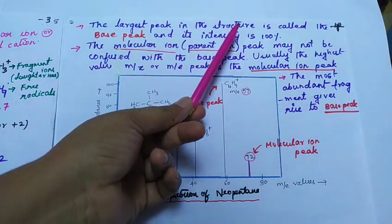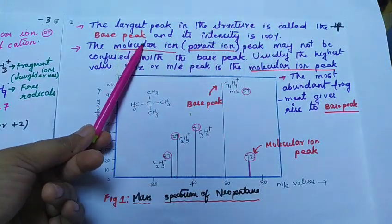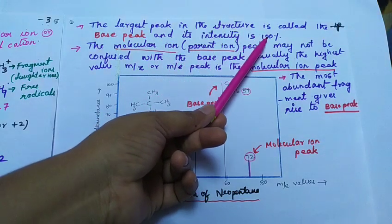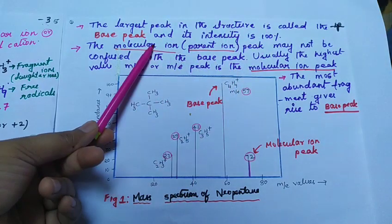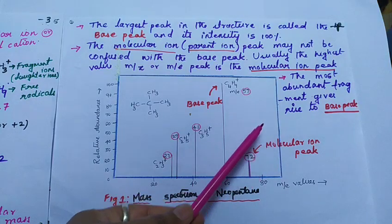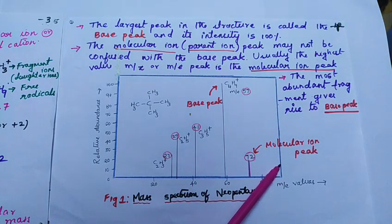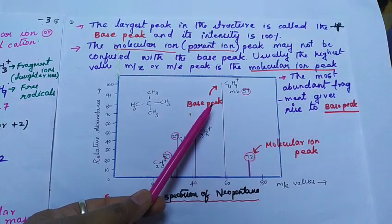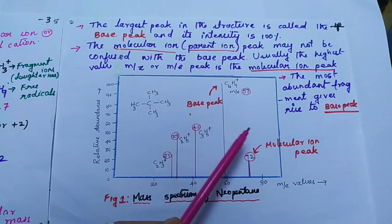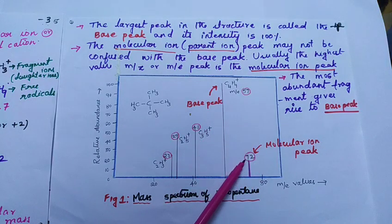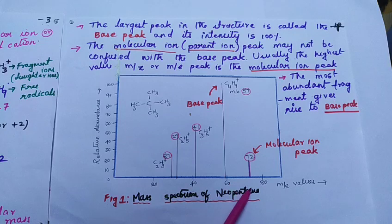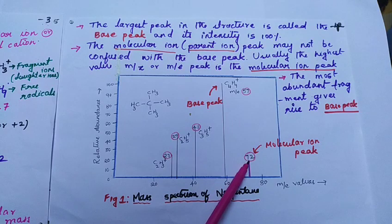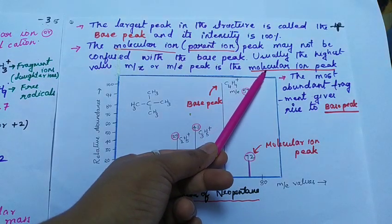The molecular ion peak, also known as the parent ion peak, should not be confused with the base peak. Usually, the highest m/z or m/e value indicates the molecular ion peak. You can see here the m/z value of this peak is 72, which is the highest, so it is the molecular ion peak.